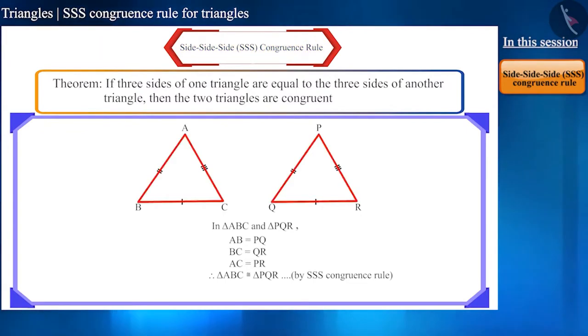If three sides of two triangles are equal, then they are congruent according to the SSS congruence rule. And we know that the corresponding parts of congruent triangles are equal. So, the corresponding angles will also be equal.